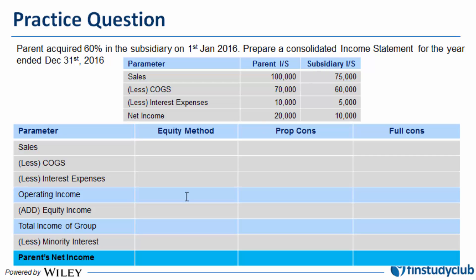I have also compared how three methods stack up against each other: the equity method, where there is significant influence; full consolidation, which is our current discussion; and proportionate consolidation, which we haven't formally covered yet but will touch upon. The acquisition is 60%, so since it is not 100%, minority interest comes into play in this case.